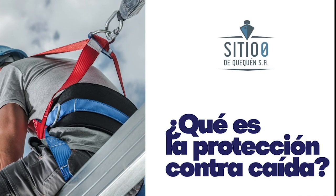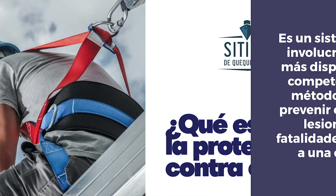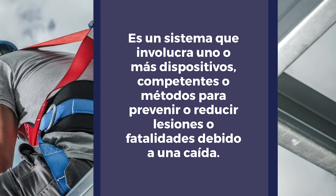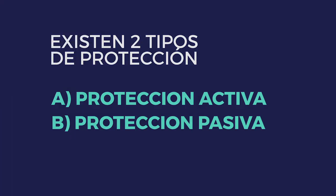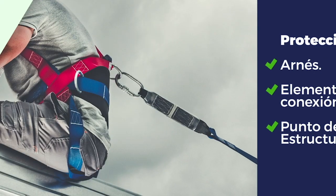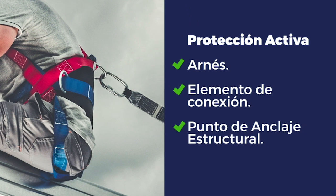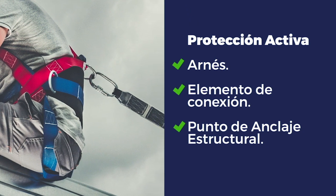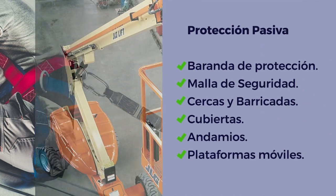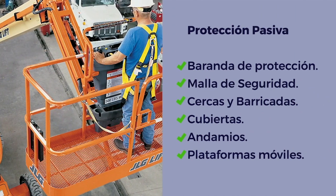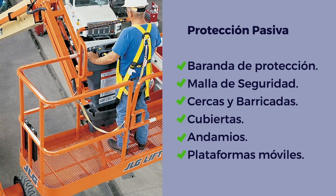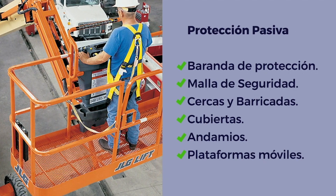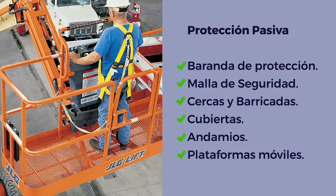¿Qué es la protección contra caída? Es un sistema que involucra uno o más dispositivos, componentes o métodos para prevenir o reducir lesiones o fatalidades debido a una caída. Existen dos tipos de protección: protección activa, que incluye arnés, elemento de conexión y punto de anclaje estructural; y protección pasiva, que incluye baranda de protección, malla de seguridad, cercas y barricadas, cubiertas, andamios y plataformas móviles.